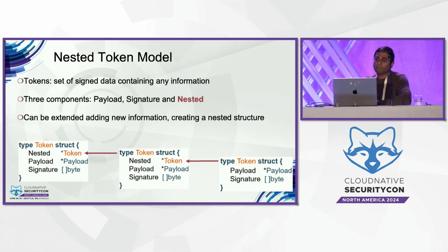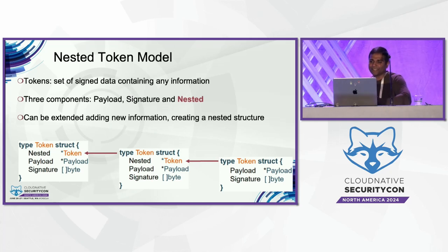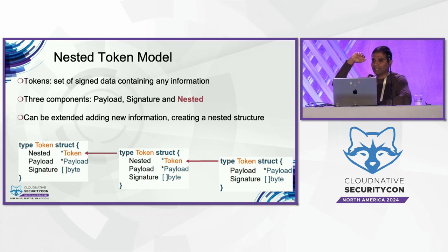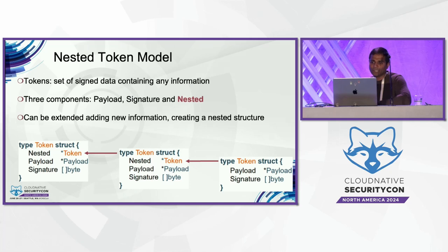You treat external entities as edge entities and issue them an identity — so anything coming from there is now accountable. For example, a use case with something like Anthem, where they were connecting to multiple external entities: you identify those edge entities, issue an identity, and anything coming from there is now accountable.